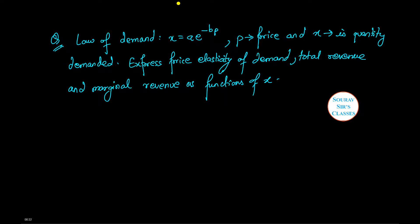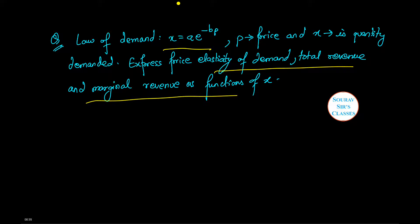Now in this question we have the law of demand as x equals A·e to the power minus BP, where P is the price and x is the quantity demanded. We have to express price elasticity of demand, total revenue, and marginal revenue as a function of x.